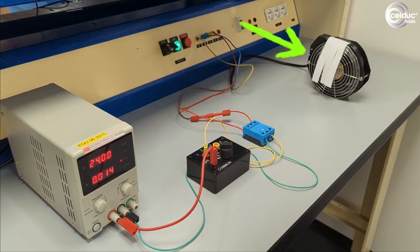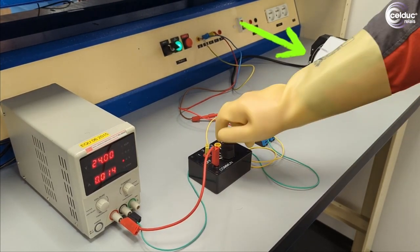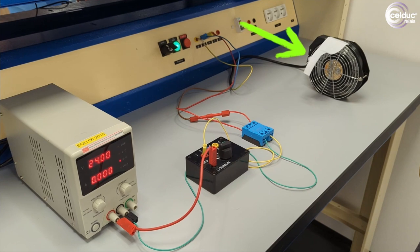When you turn on the power supply and apply a control signal to the input, the LED of the SSR switches on and the load activates.